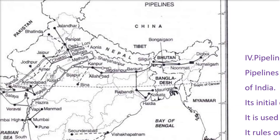From Barauni it goes to Allahabad and then via Allahabad to Kanpur. Part of this gas line also goes from Barauni to Rajbandh. We also have the Mourigram and Haldia connection, which is also connected to this pipeline.